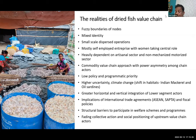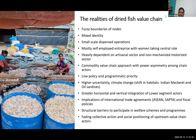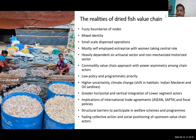In the dried fish sector, there is a full mixed identity — the people who fish in the sea also process. They hold the roles of fisher, processor, and sometimes trader. If the male member goes fishing, the woman processes at home. These are mostly self-employed enterprises with women taking a central role, heavily dependent on artisanal and non-mechanized motorized sectors, because they depend on low-value, small fish. There are also fuzzy boundaries of nodes — unlike other market systems with clear operational divisions, here roles are diffused with multiple interactions happening within and across nodes.